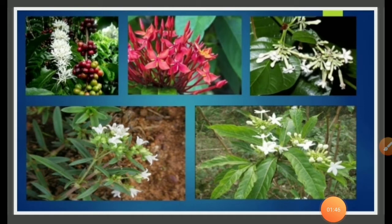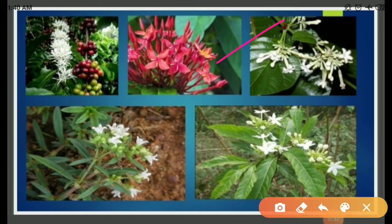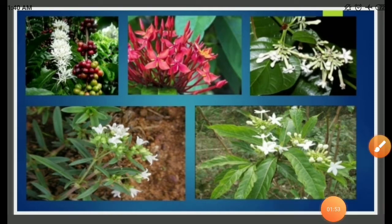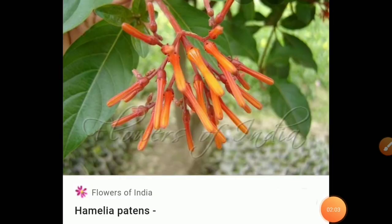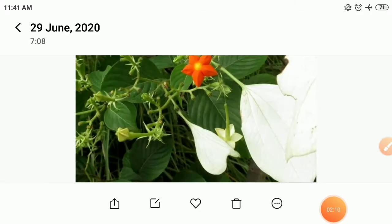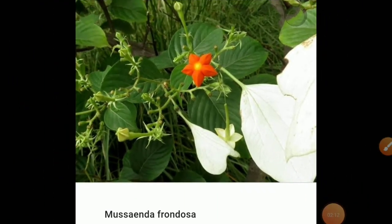This image shows a beautiful Ixora plant and Coffea arabica plant belonging to the family. This is Musanda, a very beautiful ornamental plant belonging to the family Rubiaceae. This is Hamelia patens, a garden ornamental plant belonging to the family. This is a species of Musanda, a beautiful ornamental plant with a modified sepal.